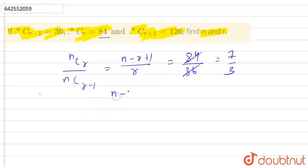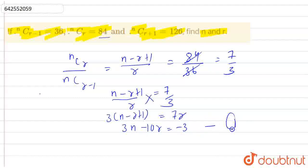According to this, N-R+1 over R is equal to 7 by 3. By cross-multiplying, we get 3 into N-R+1 is equal to 7R. On solving this, we will get 3N minus 10R is equal to minus 3. Let's name it as equation first.